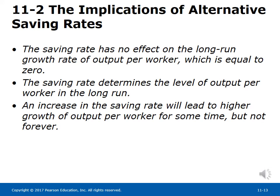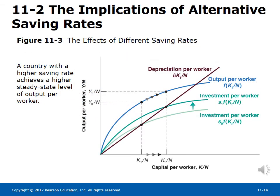The saving rate has no effect on the long-run growth rate of output per worker, which equals zero. The saving rate determines the level of output per worker in the long run. An increase in the saving rate leads to higher growth of output per worker for some time, but not forever. Figure 11-3 shows that a country with a higher saving rate achieves a higher steady-state level of output per worker. The new steady-state capital per worker corresponds to where the new investment per worker curve intersects the depreciation per worker curve, leading to higher output per worker.